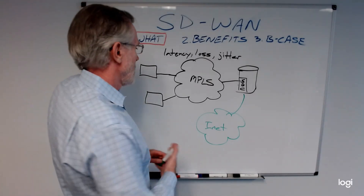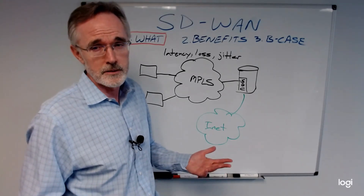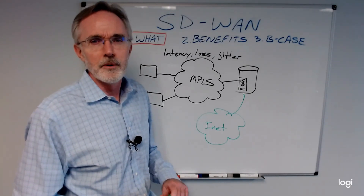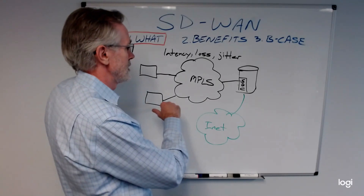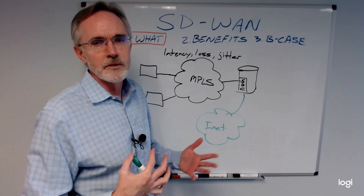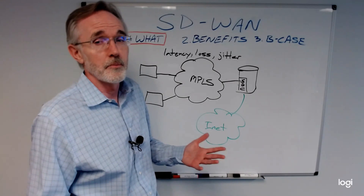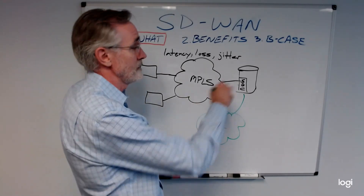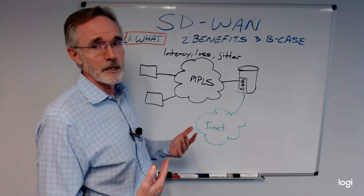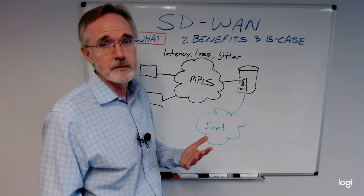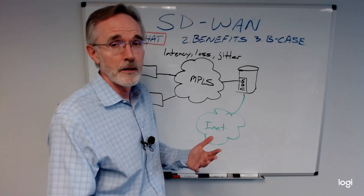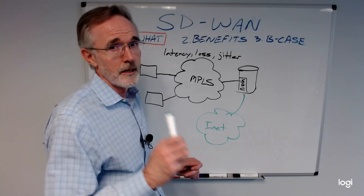MPLS is also inflexible. When you need to open a new location, you might have to wait months for a new MPLS connection, whereas today with internet you can order a broadband circuit and be up and running in probably a couple of weeks. It's also management intensive — IT engineers have to map individual paths to individual locations to ensure they are properly connected and managed, and applications are properly managed within the QoS policies over the MPLS network. It has some limitations, and SD-WAN offers better options as traffic moves out to the cloud.